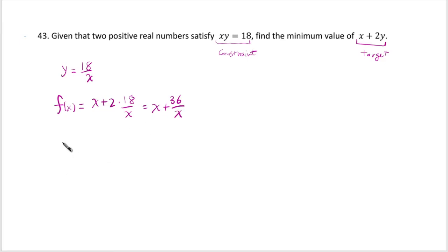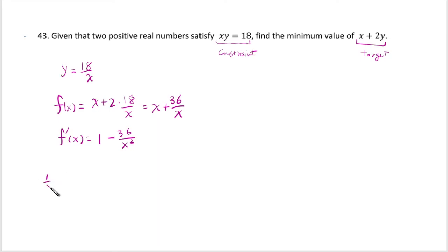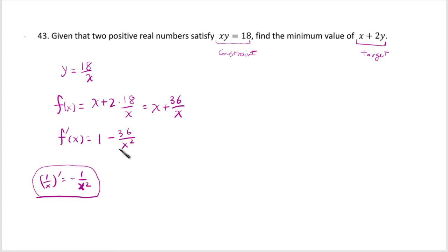Once you have that, you can use the concept of critical numbers and the first derivative test to find the minimum value. So f'(x): x differentiates to 1, and 1/x differentiates to −1/x². You can deduce this from the power rule, but it's good to memorize it as a separate rule because it appears a lot.